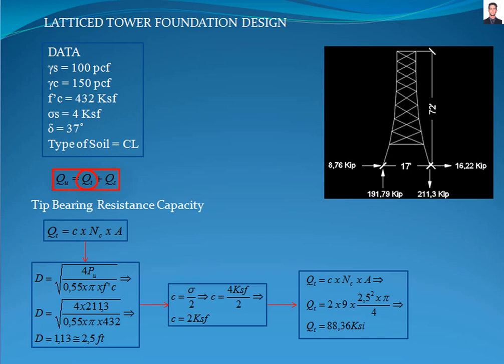In this equation, Q is the tip bearing resistance and Q_s is the skin friction, also called the pile skin resistance capacity. The tip bearing resistance is calculated with this equation, where C is the cohesion of the soil, N_c is the bearing capacity factor which for clay is equal to 9, and A is the area of the tip.